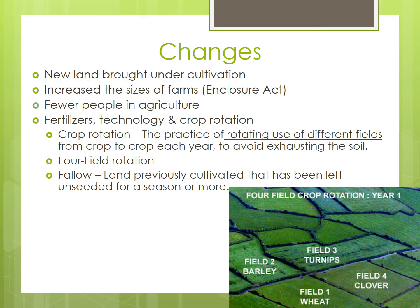Previous systems of crop rotation left fields fallow — land that had previously been cultivated that has been left unseeded for a season or more in order to rest or regenerate nutrients. But the four-field system used rest crops like clover to actually increase the amount of nutrients provided to the soil. In addition, root crops like turnips were planted and served as feed for the growing animal population, who in turn provided manure for fertilizer.